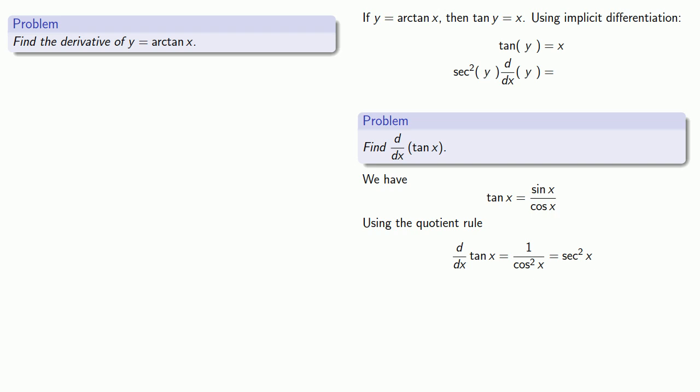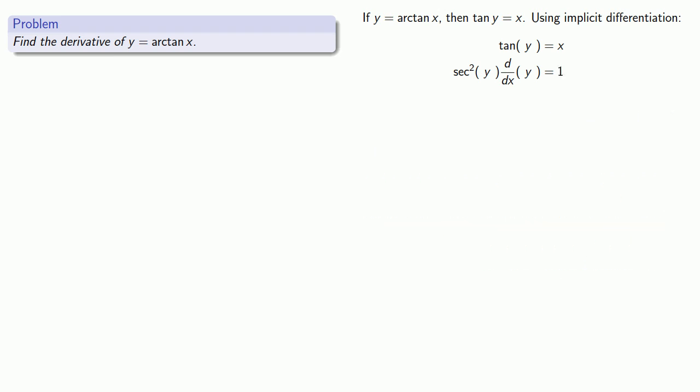Meanwhile, on the right-hand side, the derivative of x is just 1. Now I'll solve for dy dx, which gives me 1 over secant squared y.